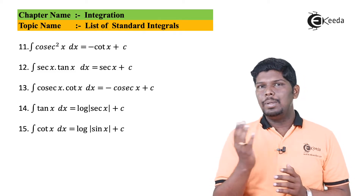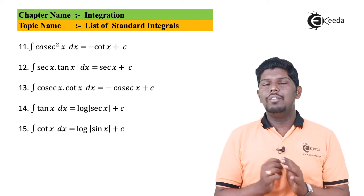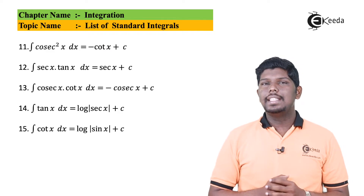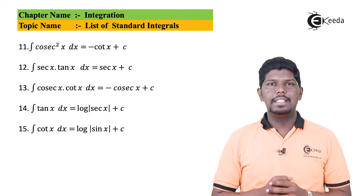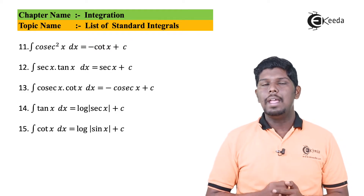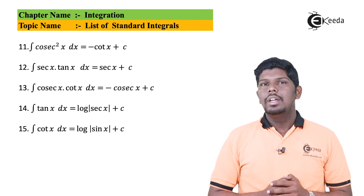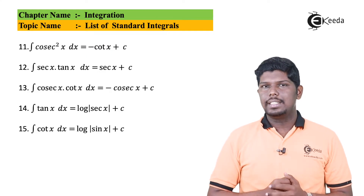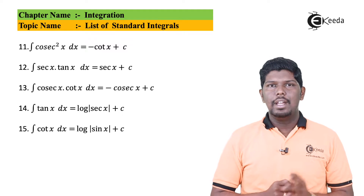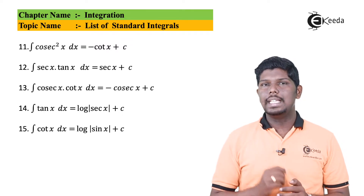The functions on the right-hand side are the derivatives, so the reverse gives integration. Integration of sec x times tan x gives sec x plus c, while integration of cosec x times cot x gives minus cosec x plus c. Further, integration of tan x equals log of sec x plus c, while integration of cot x gives log of sin x plus c.